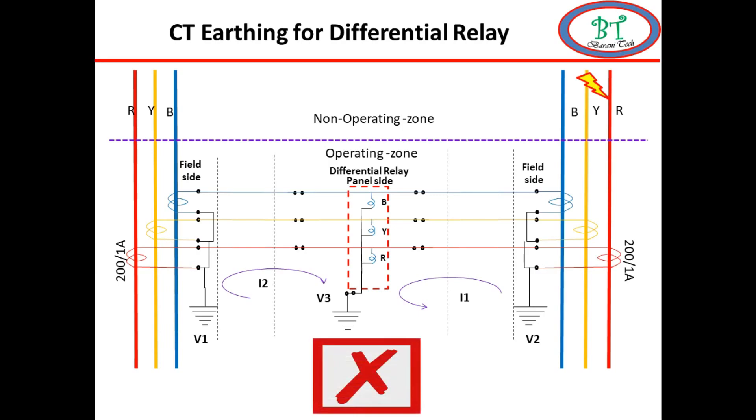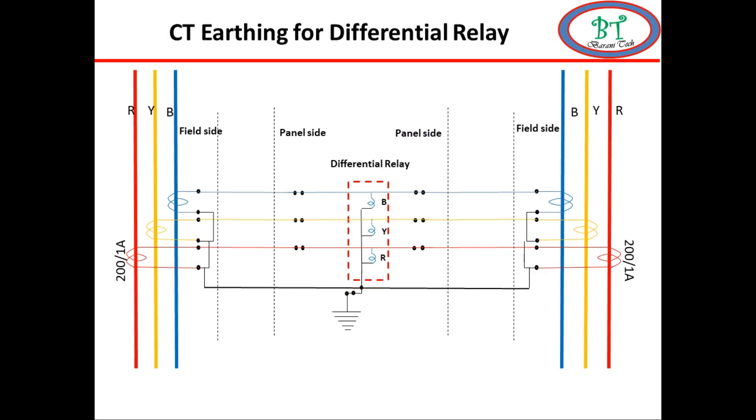And the relay mal operate. Then for this circuit which is the good place for earthing. The answer is the star point on the relay side.